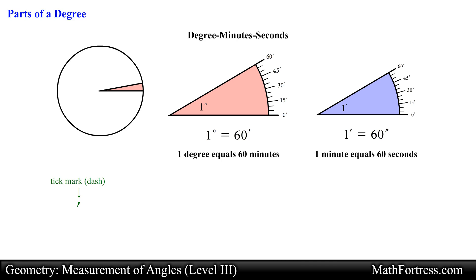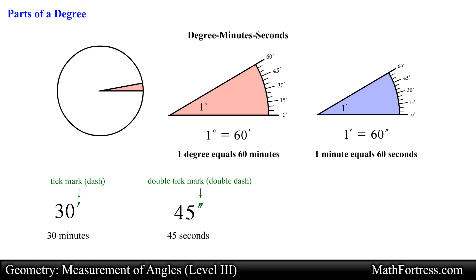We denote minutes by a single tick mark or small dash after the number — for example, 30 minutes is written as 30'. Seconds are denoted by using a double tick mark after the number — for example, 45 seconds is written as 45''. The following angle measure would be pronounced as 67 degrees, 21 minutes, 37 seconds.